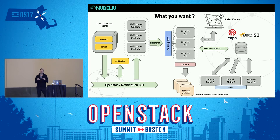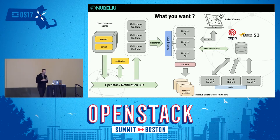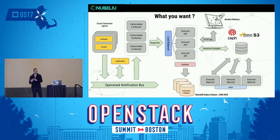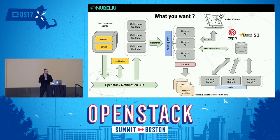The Ceilometer collector then pushes directly to Gnocchi, and we have all the Gnocchi infrastructure, which is pretty much what I described previously. We also draw the Rocket Platform, which is our way of showing the metrics to our customers — everything that is placed into Gnocchi. The indexer is responsible for putting everything together about the relationship between resources and metrics. MetricD handles the pre-aggregations for Gnocchi to answer any query really fast.